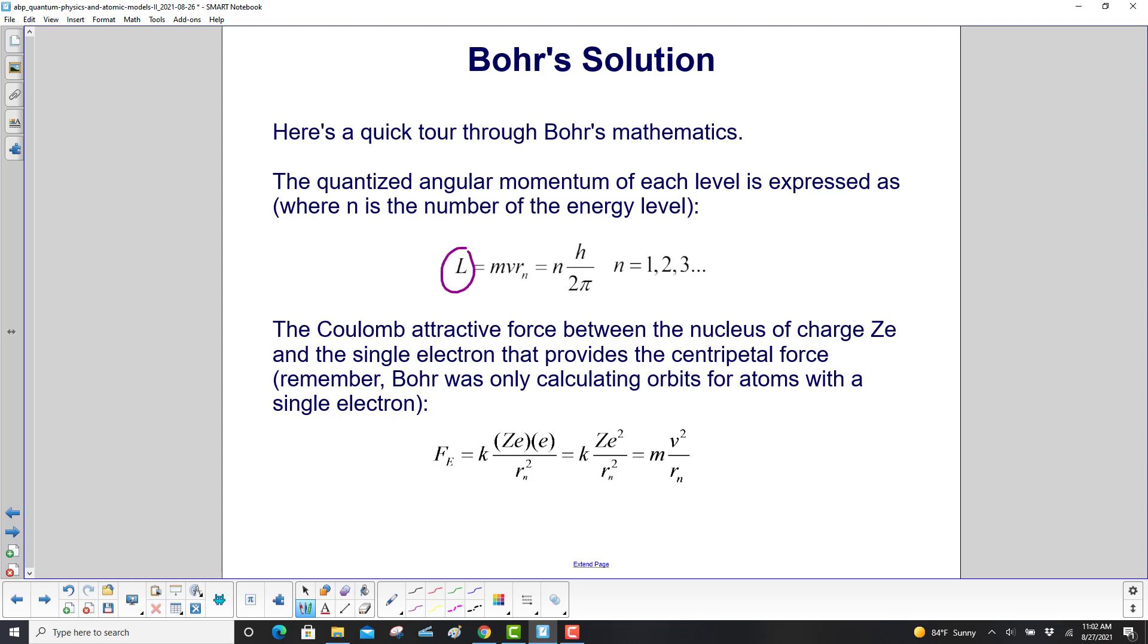Because we're talking about angular momentum. Angular momentum is L, and basically it's linear momentum, we always called that P, times the distance from the nucleus to the electron orbitals or levels. So the quantized angular momentum of each level is expressed as mvr_n, where n is the number of the energy level, can go from one, two, three. So that's equal to n times h over 2π. Again, don't worry about that.